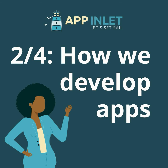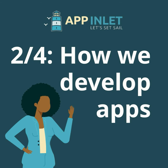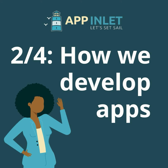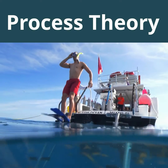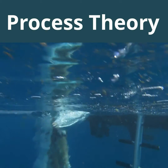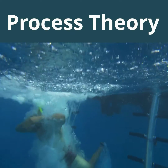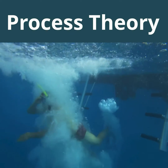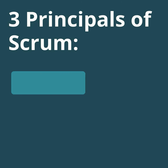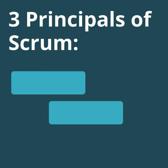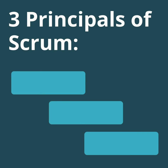Welcome to the second episode of How We Develop Apps. In this video, we will dive a little deeper into the process theory that we use to develop apps, which is called Scrum. Scrum consists of three principles: namely transparency, inspection, and adaption.